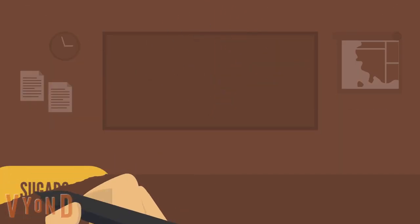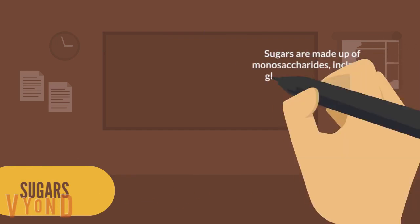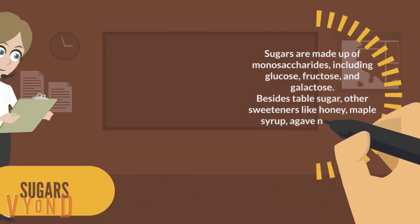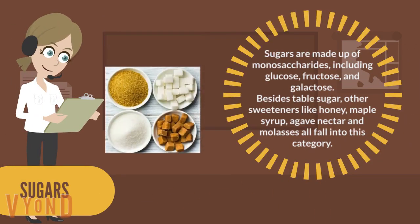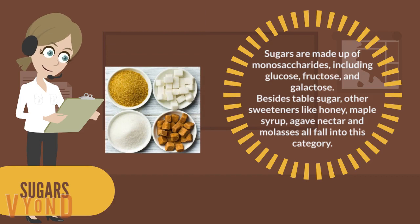Sugars are made up of monosaccharides, including glucose, fructose, and galactose. Besides table sugar, other sweeteners like honey, maple syrup, agave nectar, and molasses all fall into this category.